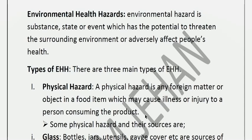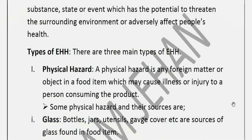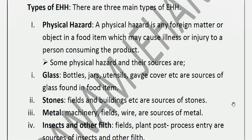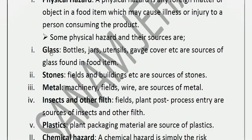Physical hazards are foreign matters or objects in food items that can cause illness or injury when a product is consumed. The sources of physical hazards include glass from jars, utensils, covers, etc. Glass is a common source that can cause cuts and other injuries.